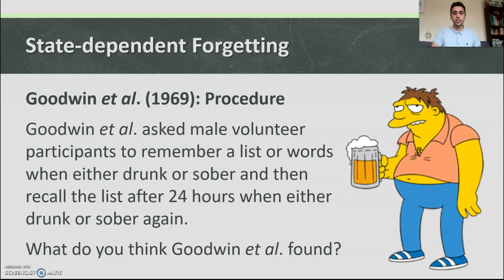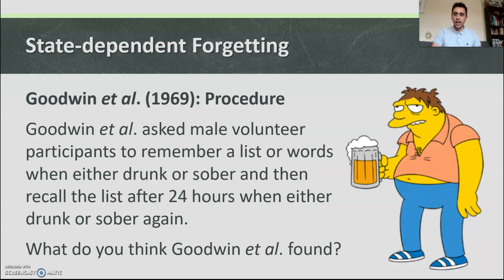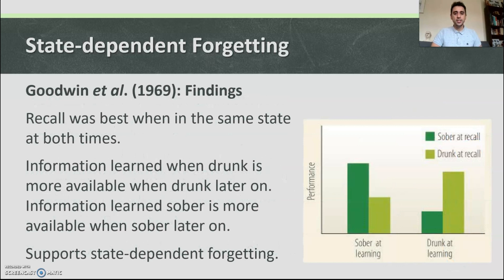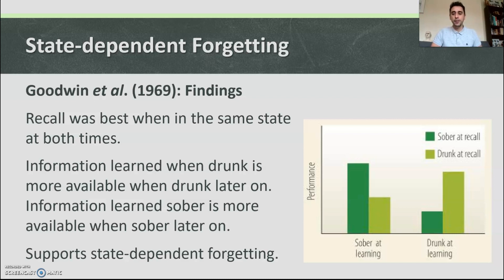Goodwin et al. in 1969: male volunteer participants were asked to remember a list of words when either drunk or sober, and then recall the list after 24 hours when either drunk or sober again. Recall was best when participants were in the same state at both times — information learned when drunk is more available when drunk later on, and information learned sober is more available when sober later on. This supports state dependent forgetting.